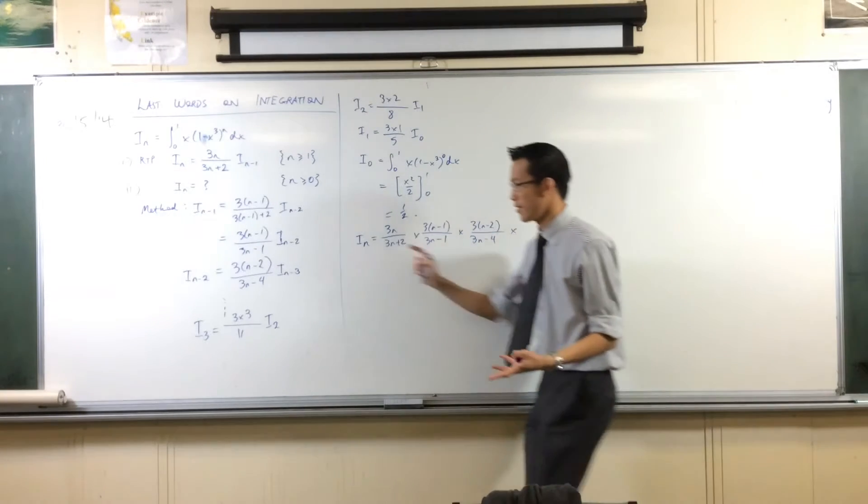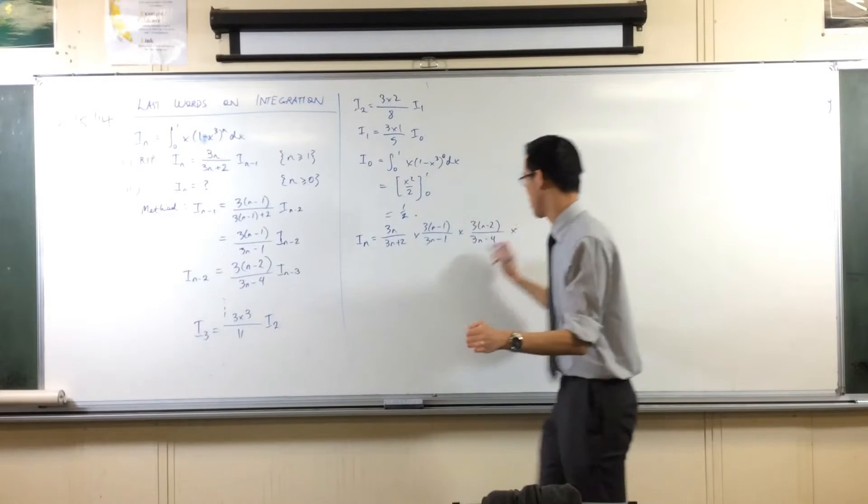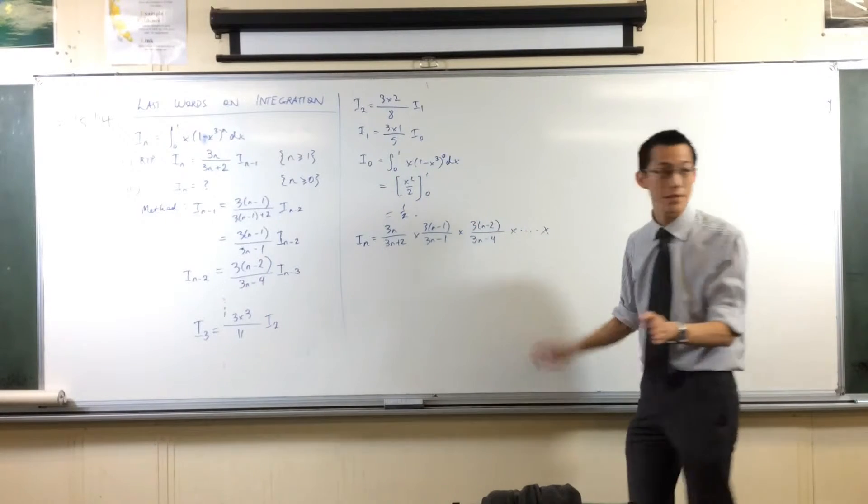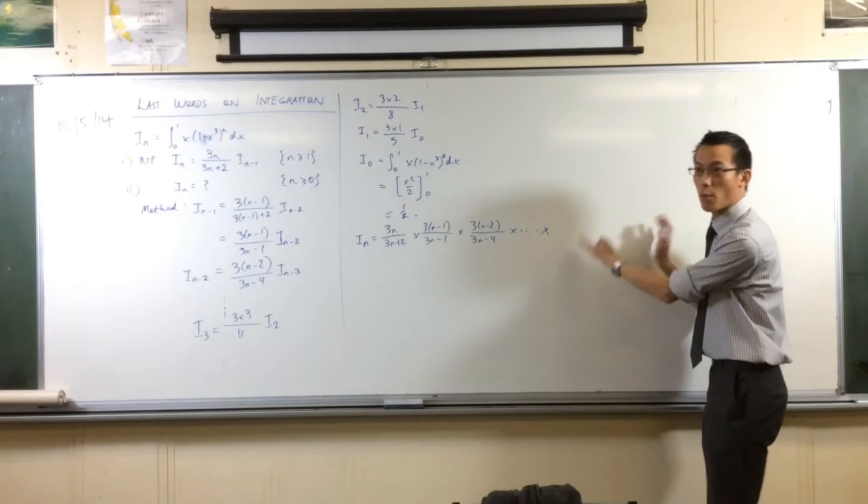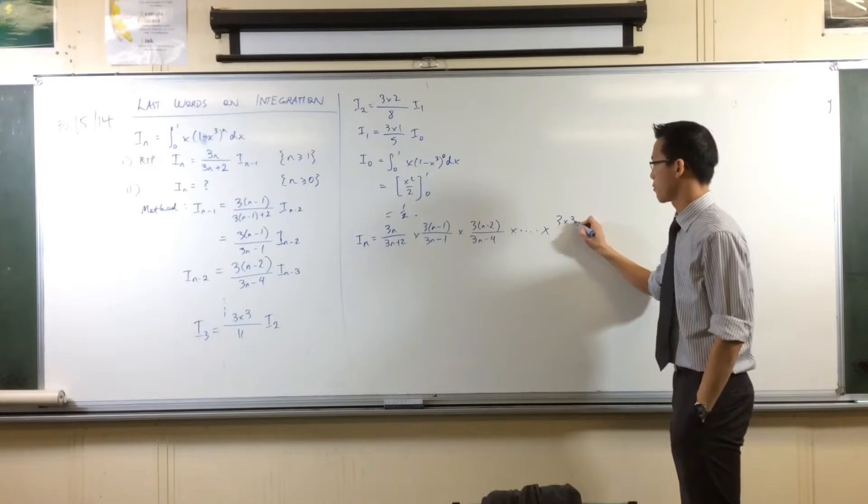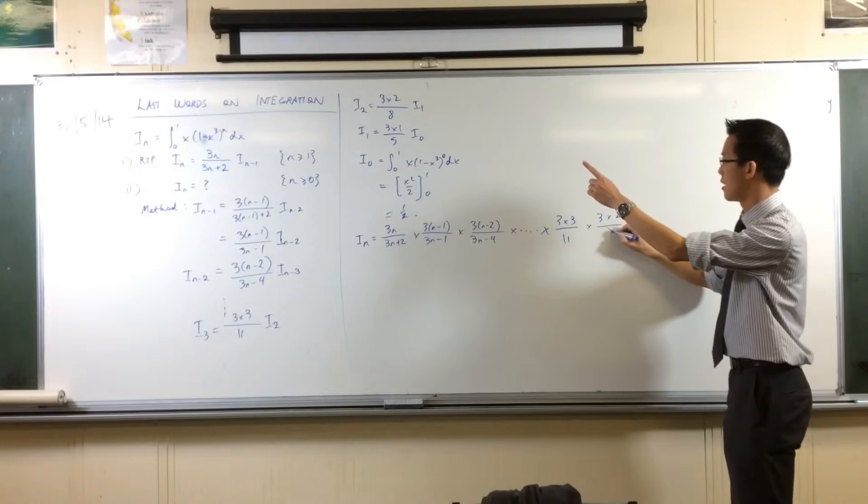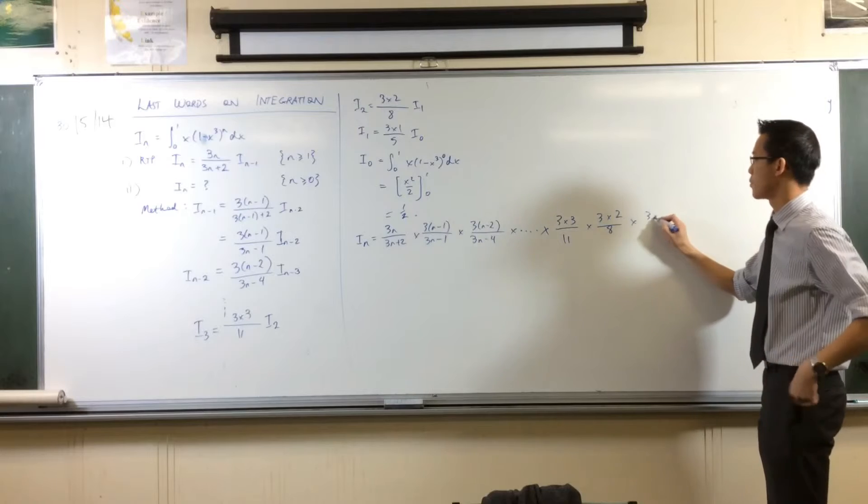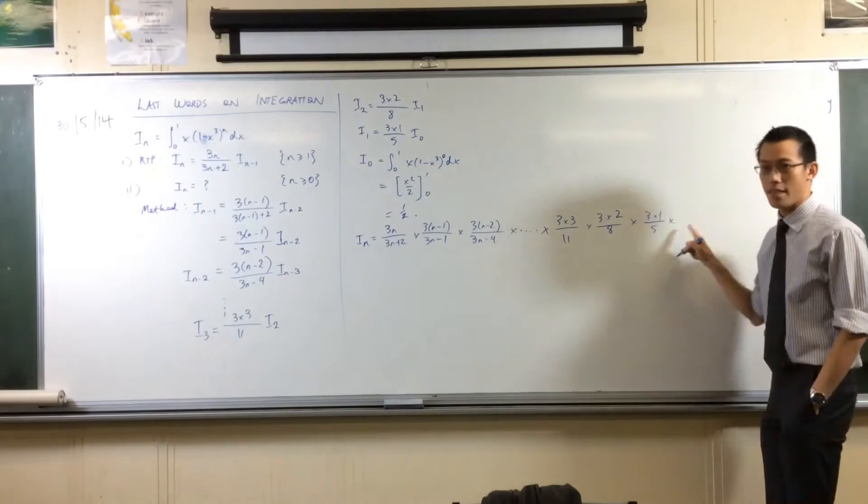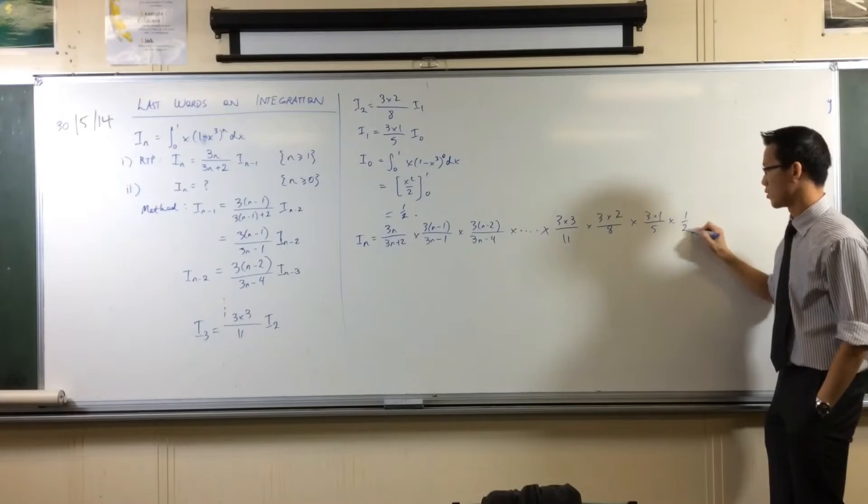Now, instead of writing the next rung, I'm going to put in what I worked out the next rung was. It's 3 times n minus 1, on 3n minus 1 times 3n minus 2 on 3n minus 4. At this point, I said, look, all the steps are going to keep on going. What have I got? I got 3 times 3 on 11, 3 times 2 on 8, 3 times 1 on 5, and then I've got I_0 hanging off on the end. Which is a half.